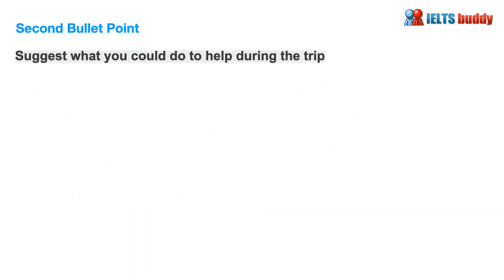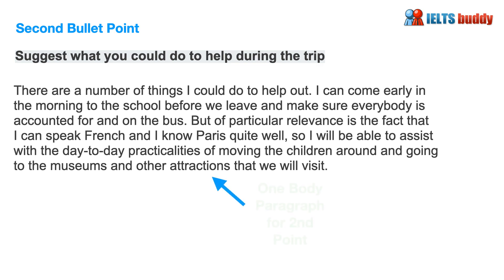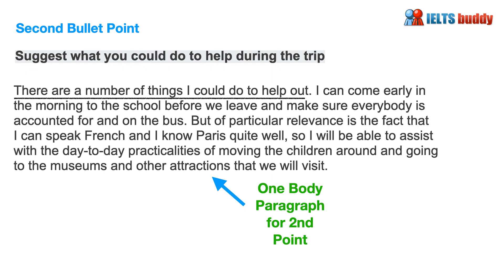For the second bullet point you're asked to suggest what you could do to help out during the trip. This makes up your next body paragraph. You can see there's a clear topic sentence: 'There are a number of things I could do to help out.' This makes it very clear what the paragraph is about. For example: 'I can come early in the morning to make sure everybody's accounted for on the bus.' Also of relevance is the fact that the writer can speak French and knows Paris well, so they'll be able to assist with the day-to-day practicalities of moving the children around and going to museums and other attractions.